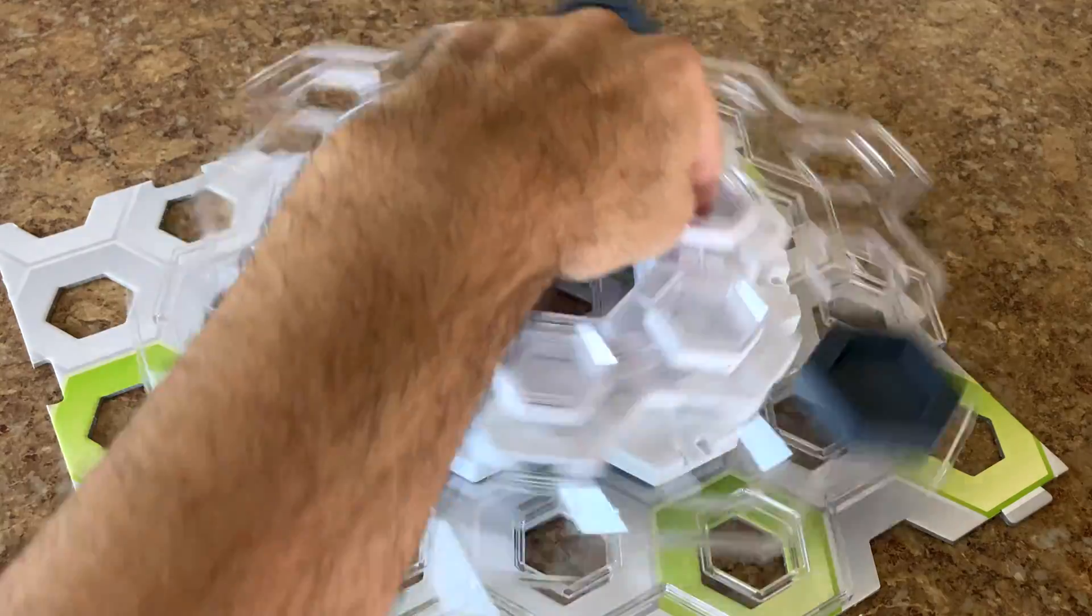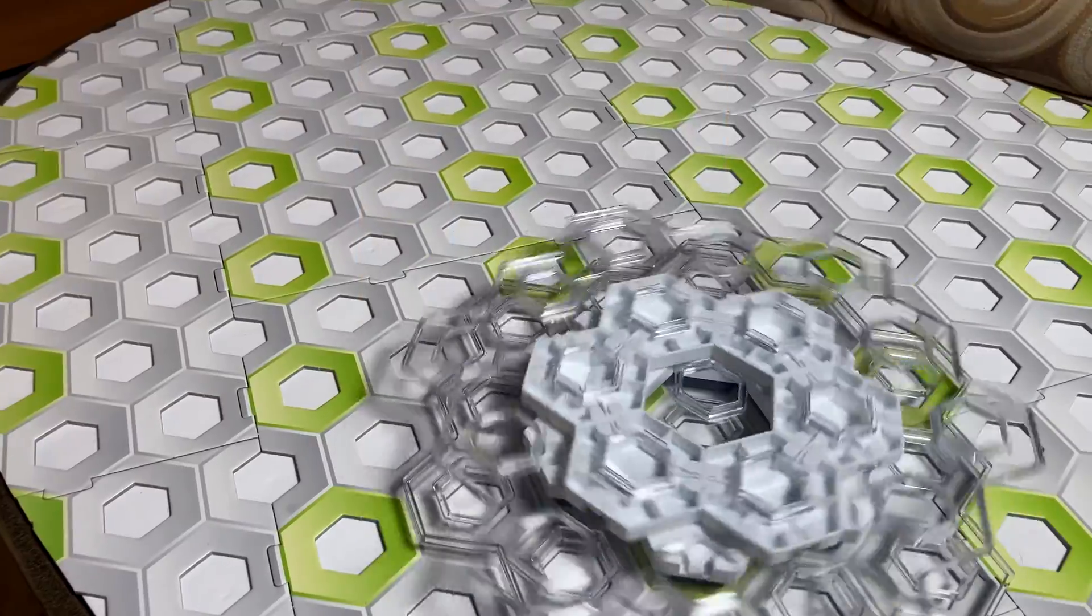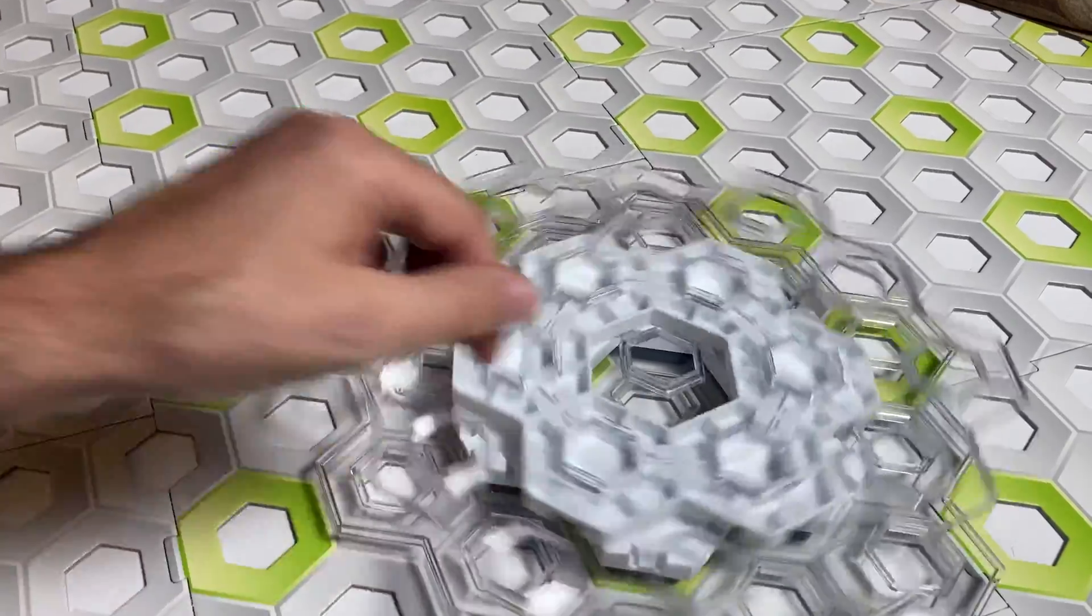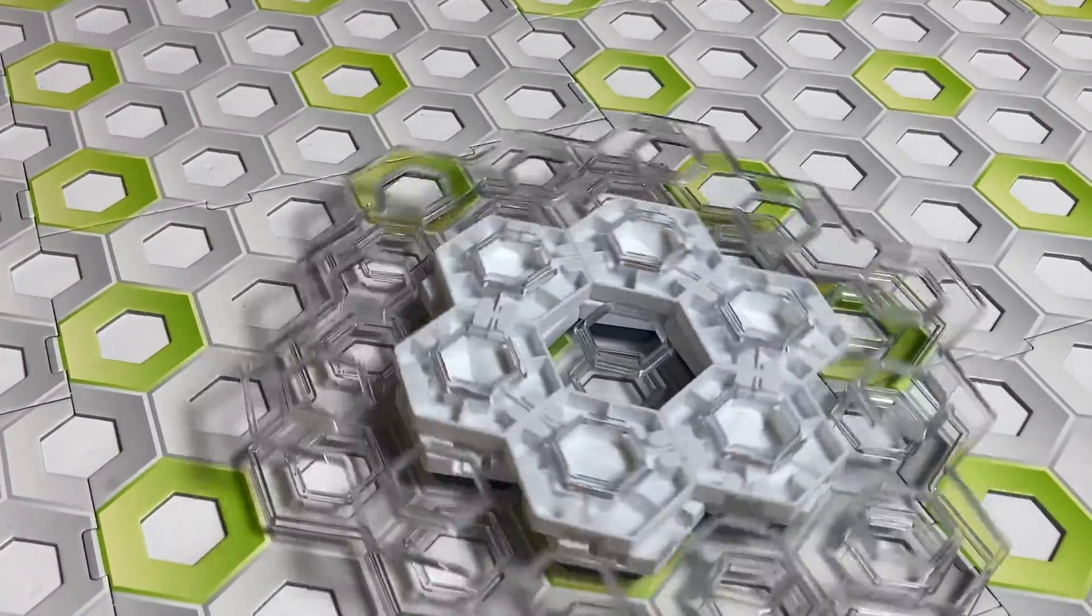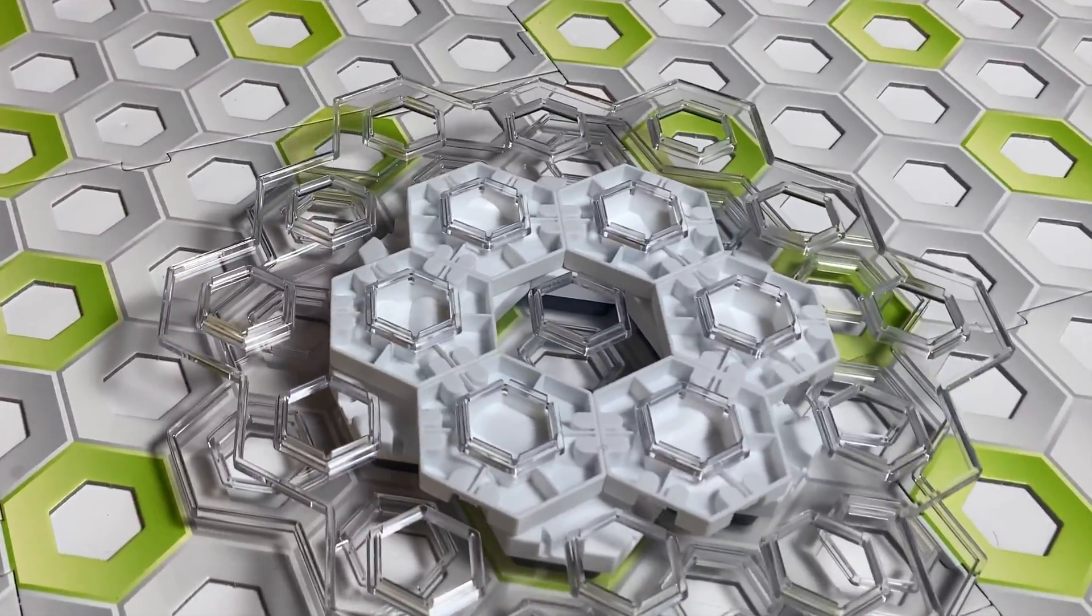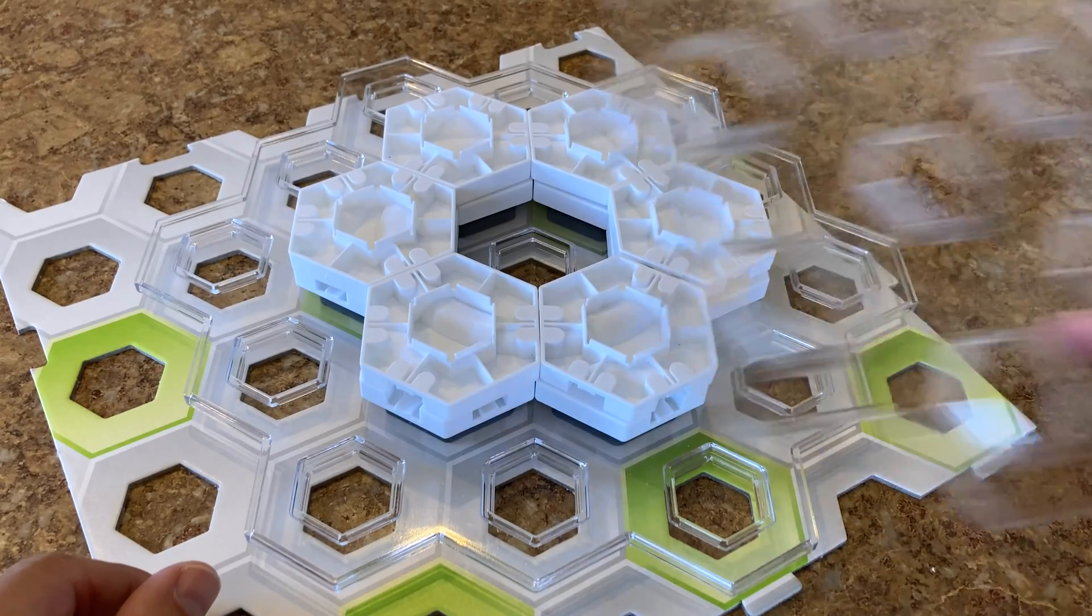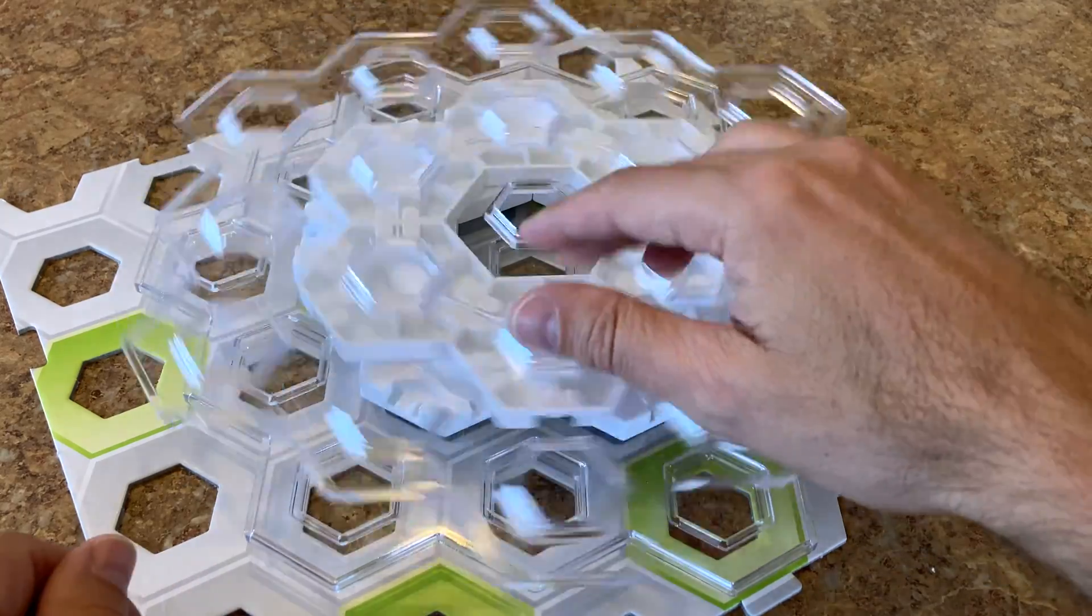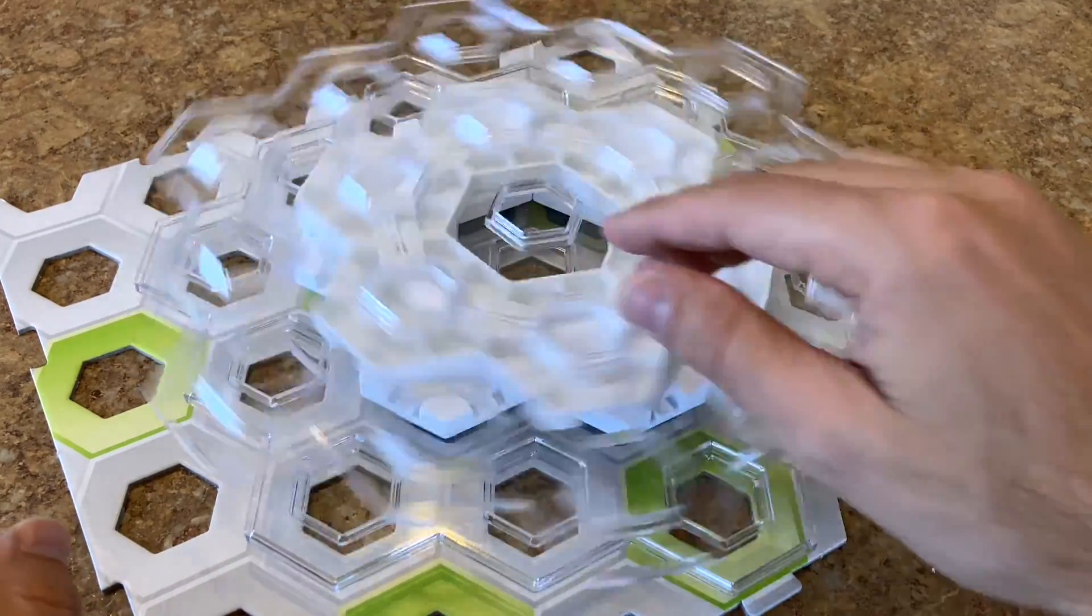The foundation of the mega turntable is the marble bearing we built in the last episode of Marble Run Tech. If you haven't seen that video, here's the link to watch that now, or I'll provide the link again at the end of this video. So the first step is to build a marble bearing with the large clear platform on top.